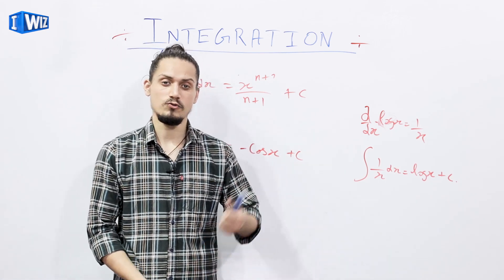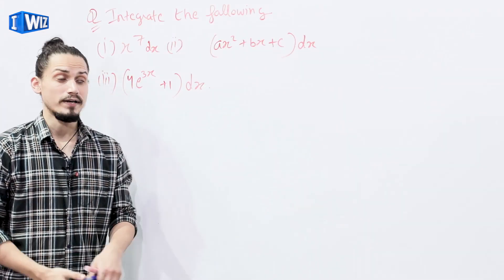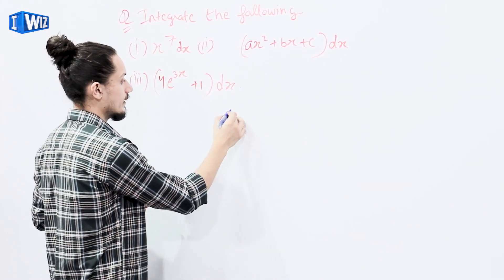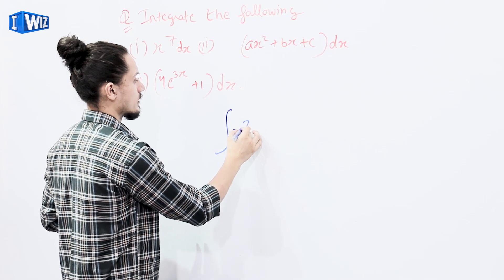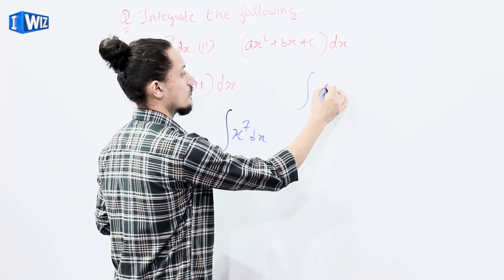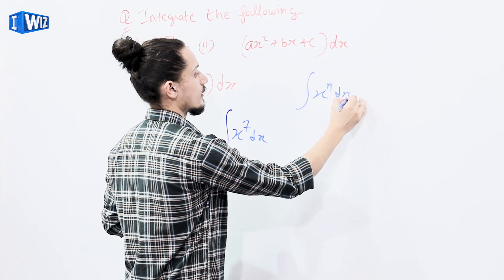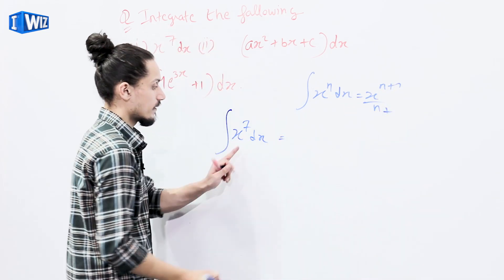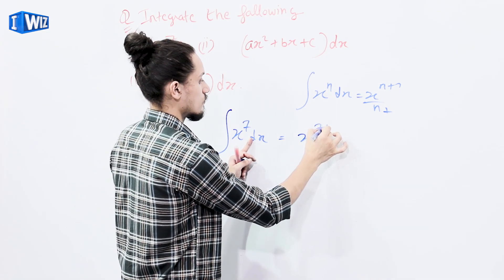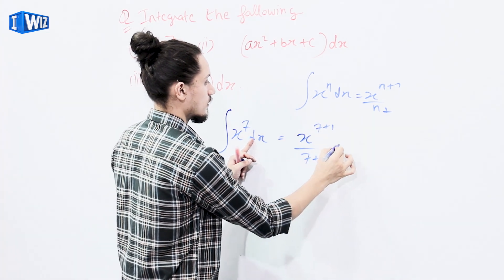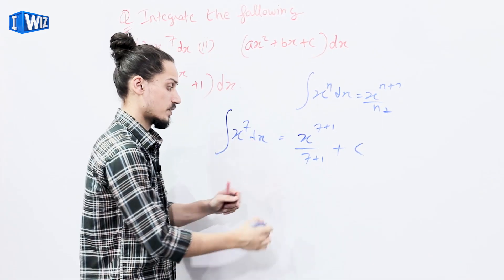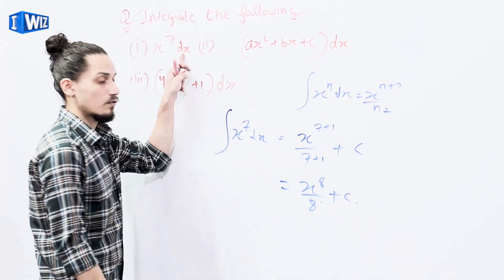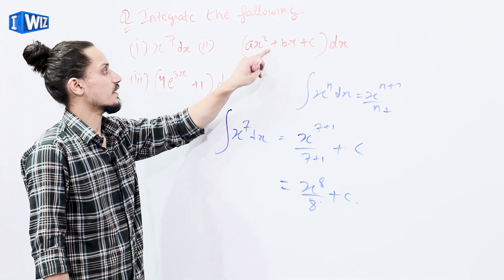First example: we have to integrate x^7 dx. Integration of x^7 dx follows the form integration of x^n dx equals x^(n+1)/(n+1) + C. Here n = 7, so we get x^(7+1)/(7+1) + C, that is x^8/8 + C.